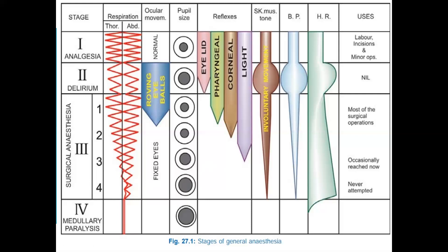Stage 4 spans from stoppage of respiration to death. This may arise as a result of anesthetic overdose, which causes medullary paralysis with respiratory arrest and vasomotor collapse. Pupils are very widely dilated and essentially all other parameters are absent. This stage represents death and is a point you would never want to reach.